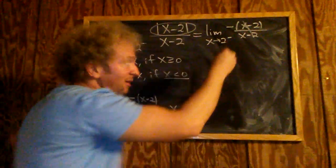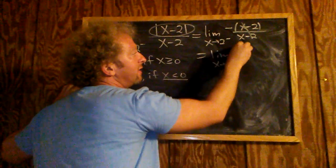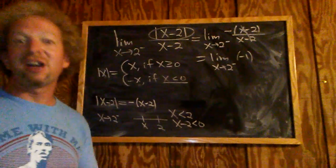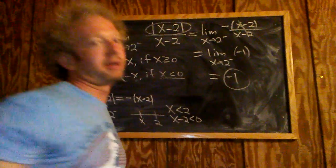These cancel, so you get the limit as x approaches 2 from the left of negative 1. What happens to negative 1 when x approaches 2 from the left? Nothing - it's still negative 1. So the answer is negative 1.